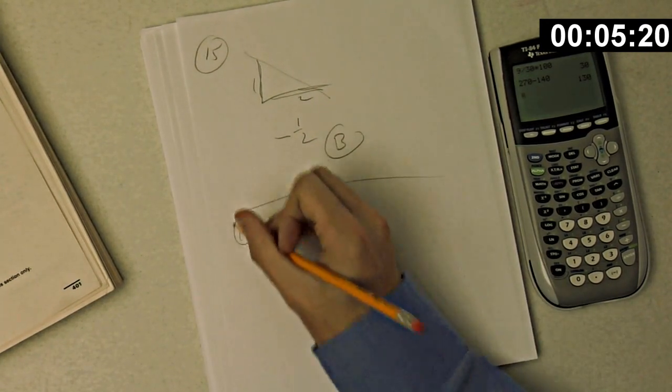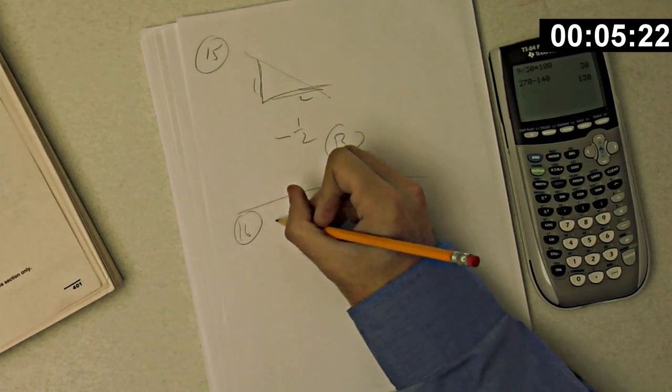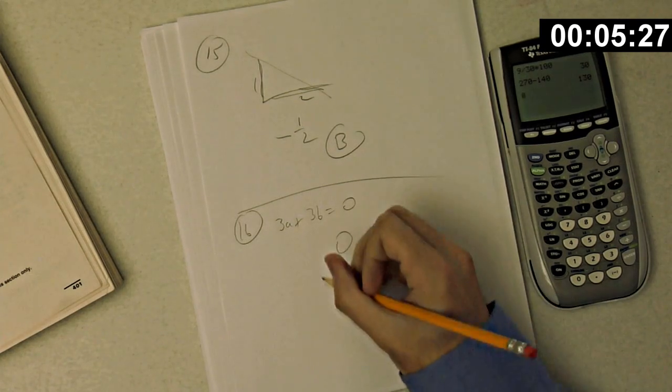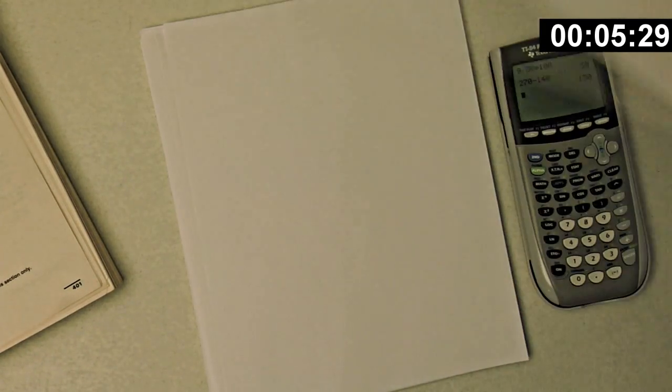Number 16. If 3a plus 4b is B, so 3a plus 3b is zero. What is 6a plus 6b? That's zero as well. Choice A.